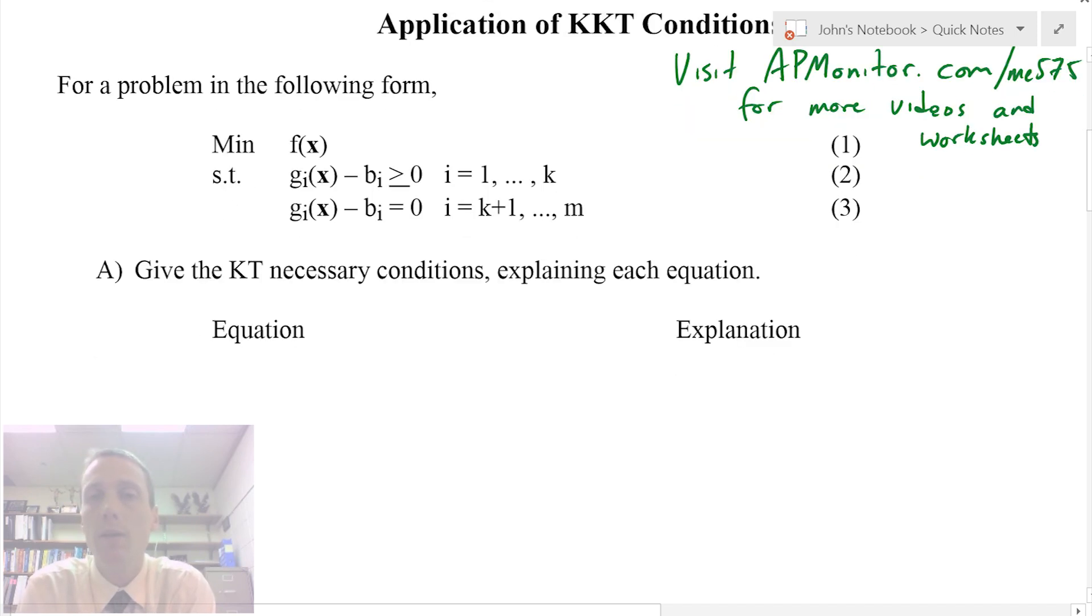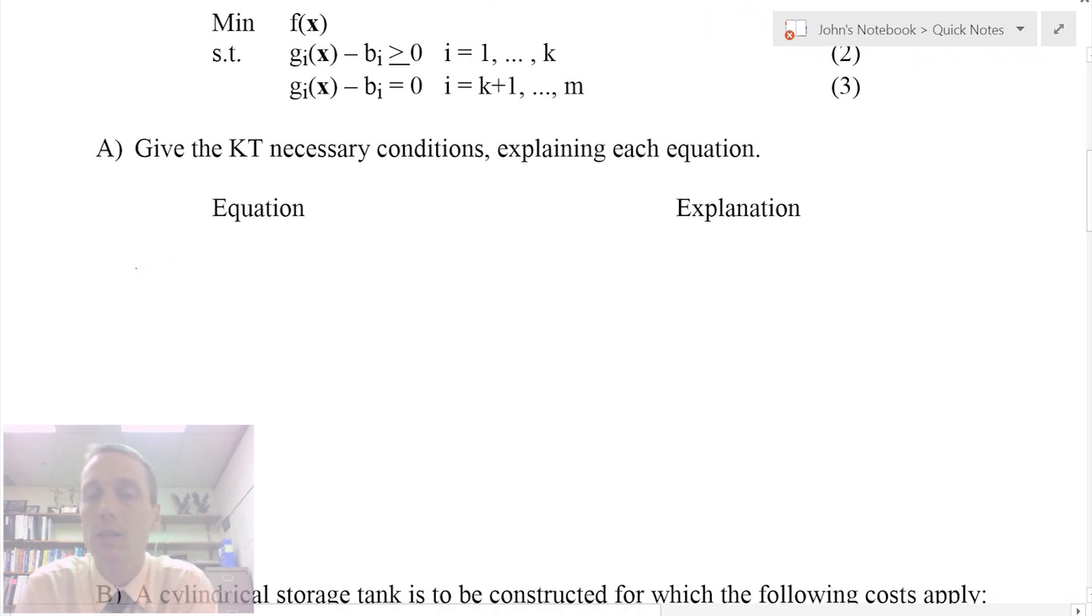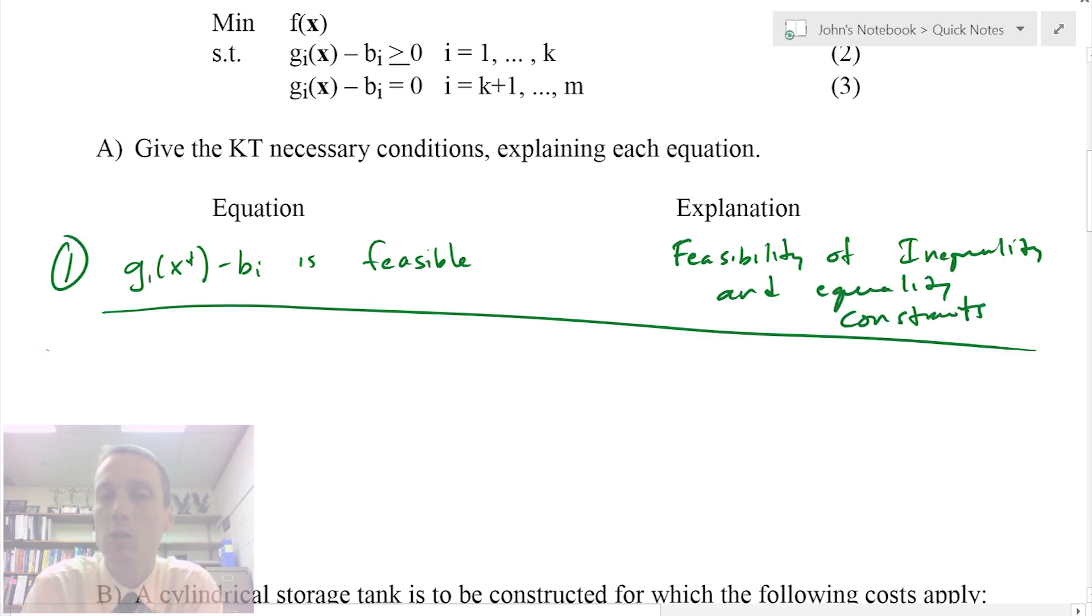Let's go through and first give the necessary KKT conditions, explaining each equation. First, we have that our equality or inequality constraints must be feasible at our optimal solution. So the explanation for this is feasibility of inequality and equality constraints.